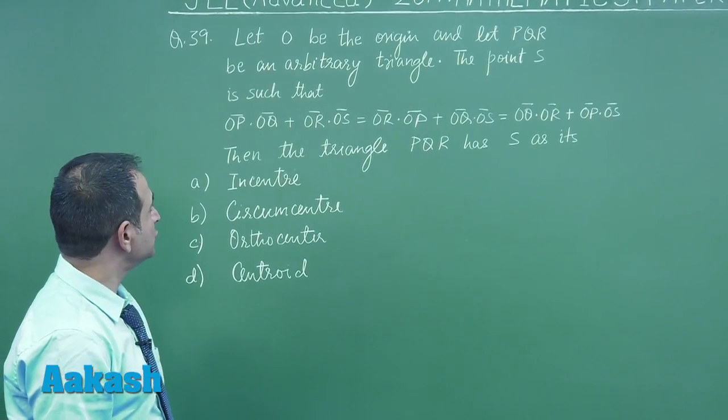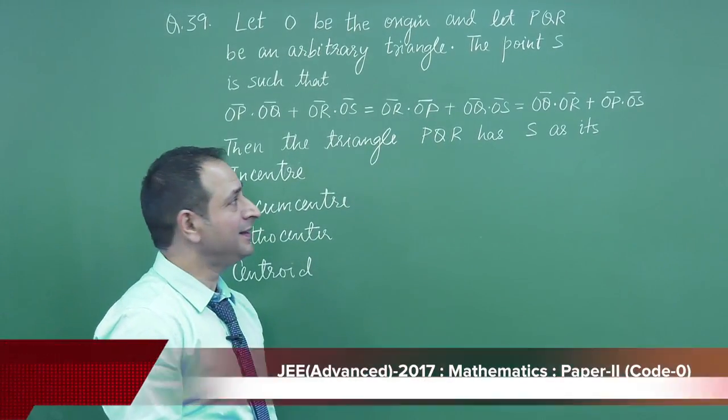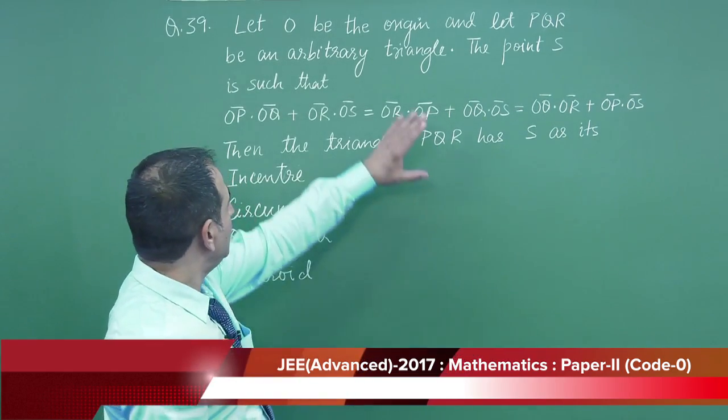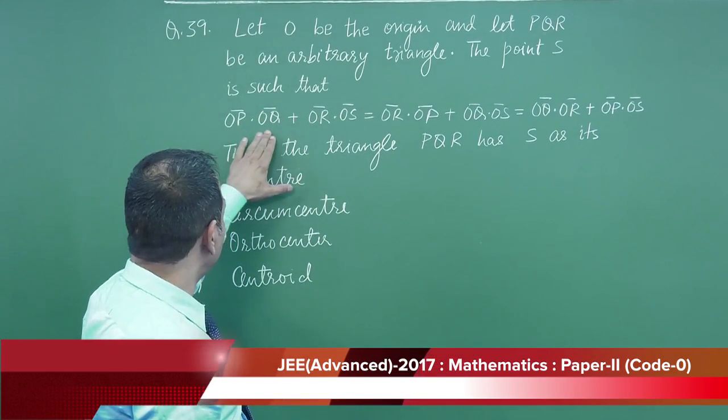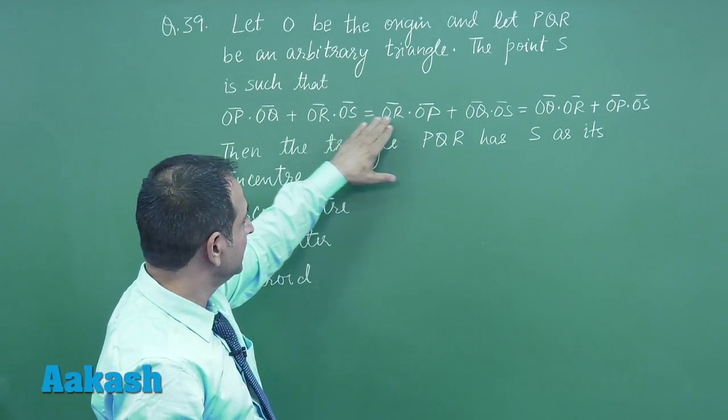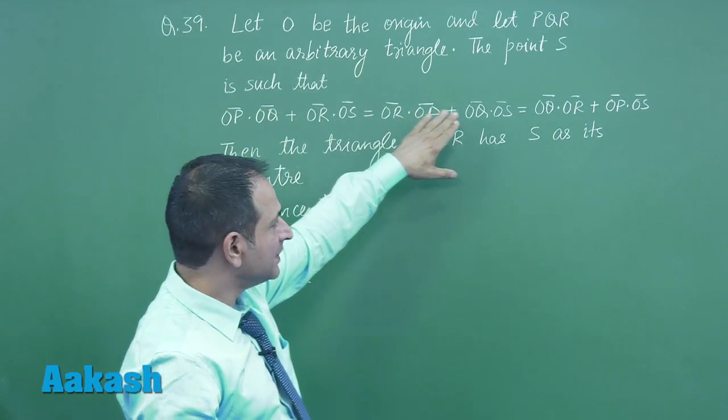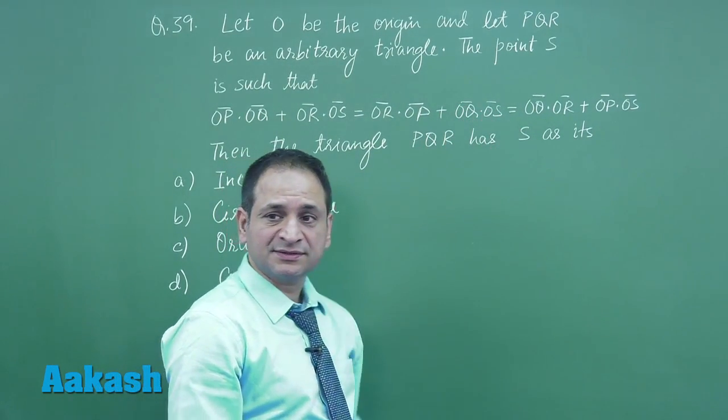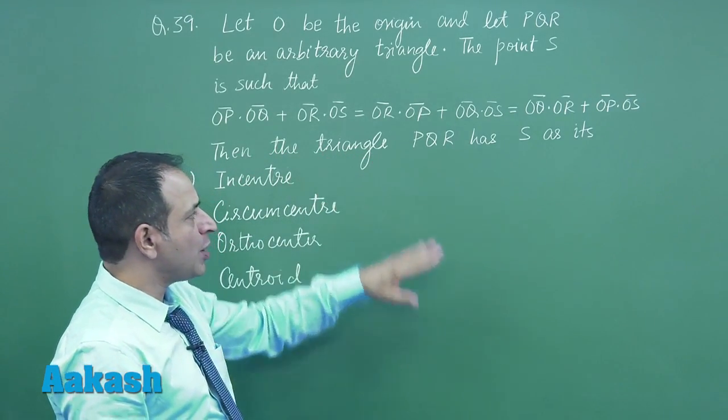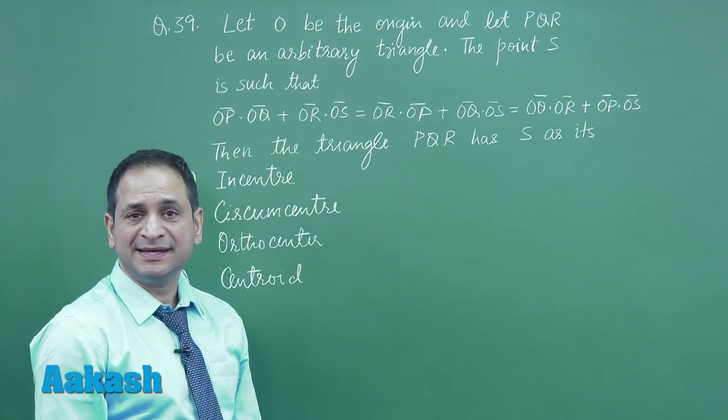The question is: let O be the origin and let PQR be an arbitrary triangle. The point S is such that the sum of dot products OP·OQ + OR·OS equals the sum OB·OP + OB·OS, which we can read properly. Now we have to decide: the triangle PQR has S as its...